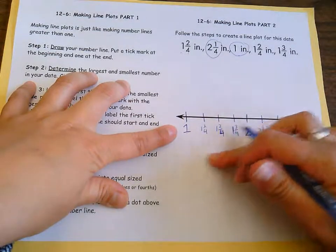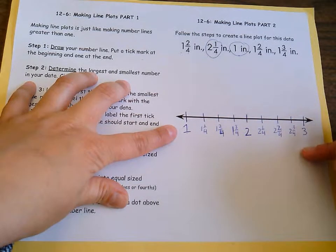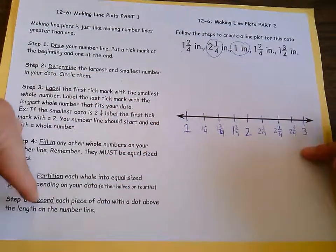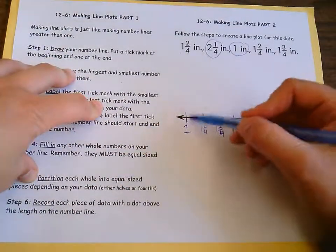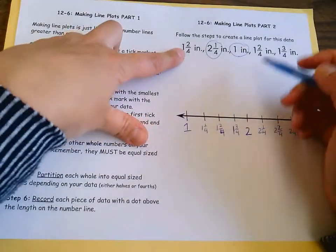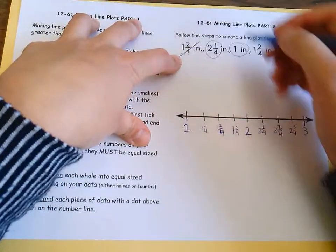Now that I have my tick marks all filled in and labeled, my next step is to record the data with a little dot or an X above those hash marks. And I like to go in order, so one and two fourths would be right here.